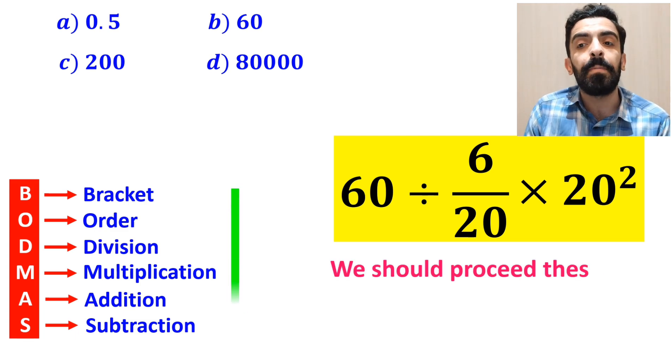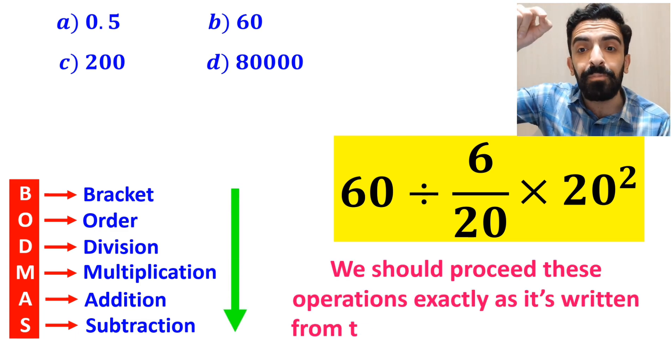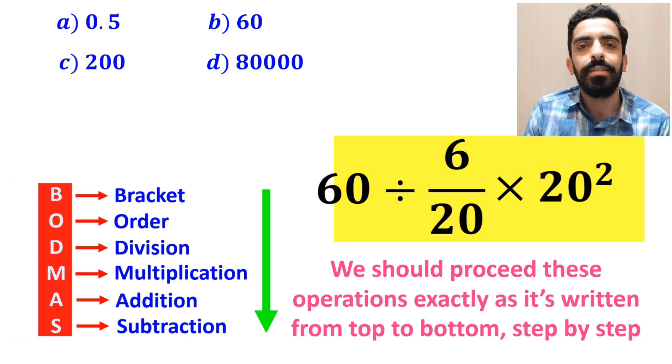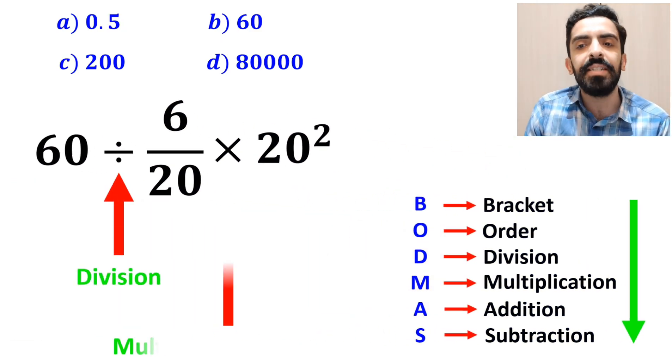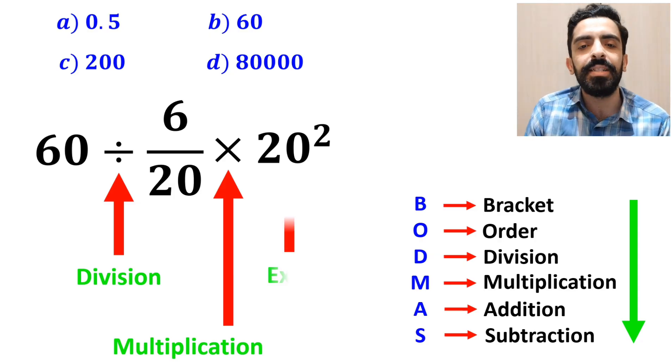We should proceed these operations exactly as written from top to bottom step by step. As you can see in the image, in this expression first we have a division sign, then a multiplication sign, and finally an exponent.